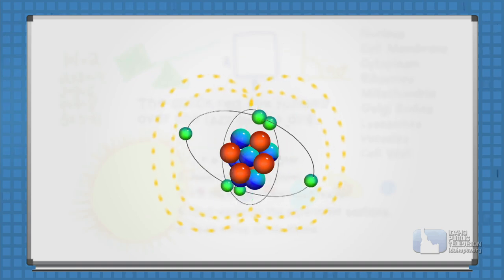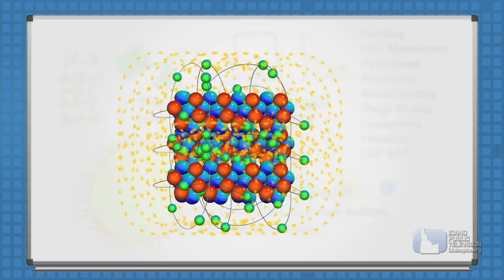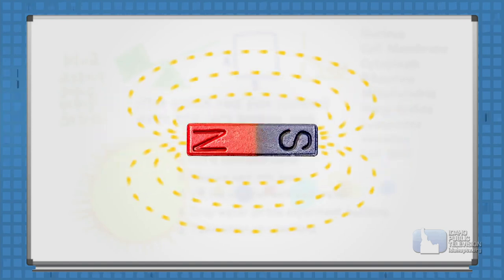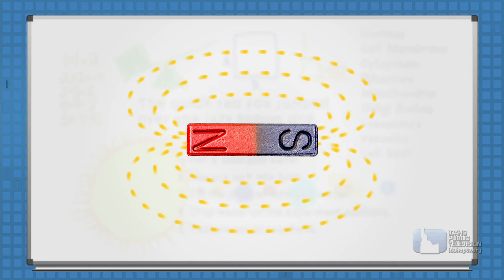When they spin around, electrons create tiny magnetic fields. In certain metals like iron or nickel, all of those tiny magnetic fields line up to create a bigger field, and that metal becomes a magnet.